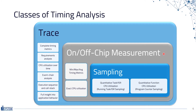On-chip measurement can either be done by utilizing some dedicated hardware such as a core performance counter, or also using some generic counters. In any case, this approach requires an instrumentation of the code, meaning dedicated software needs to be added to the actual software to be analyzed in order to control the measurement hardware. But at least this approach yields exact and reliable results.